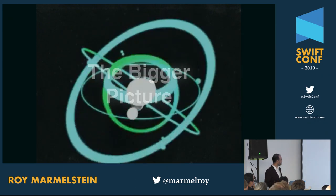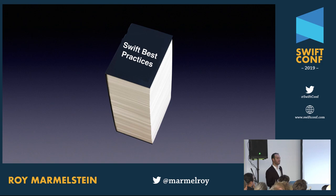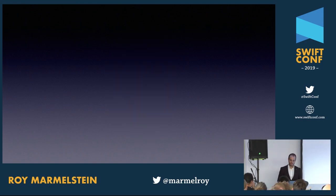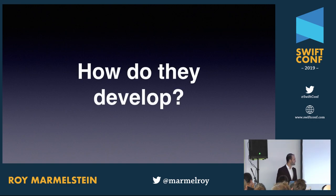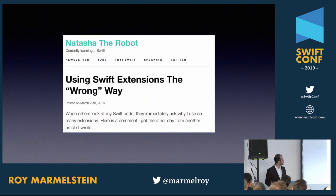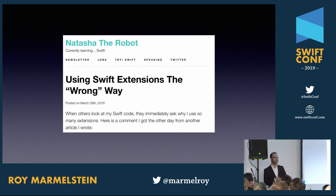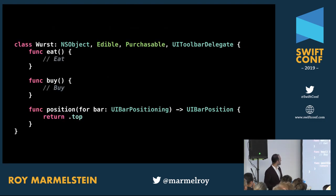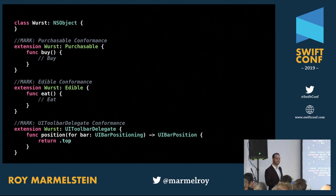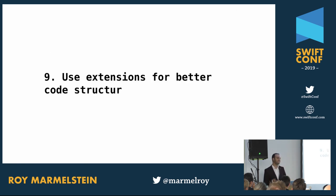Let's zoom out and talk about the bigger picture. Best practices are this set of informal rules that exist — but how do they develop? In 2016, there was a blog post by Natasha the Robot describing an alternative way of using Swift extensions for structuring code. She broke classes down into separate extensions, making code a lot more readable. A very simple idea that a lot of people adopted and it became a community best practice.